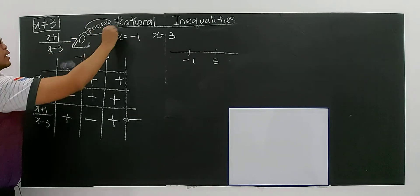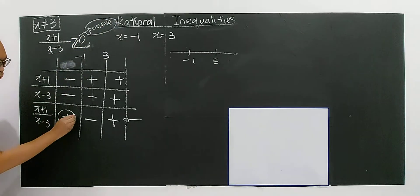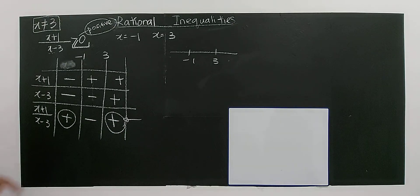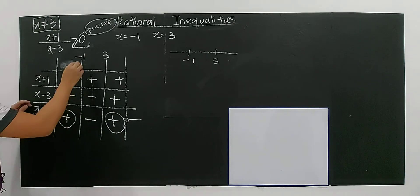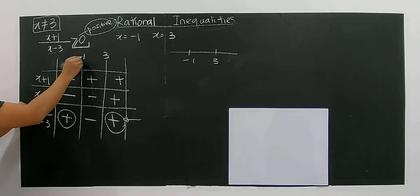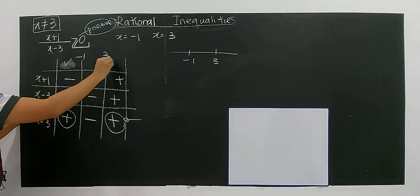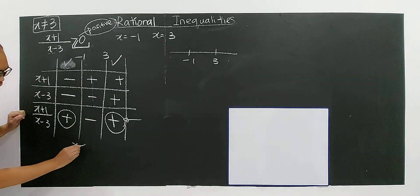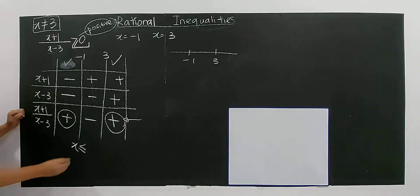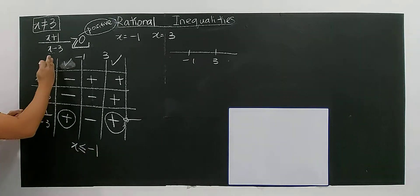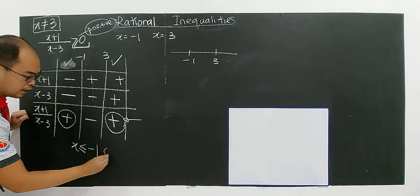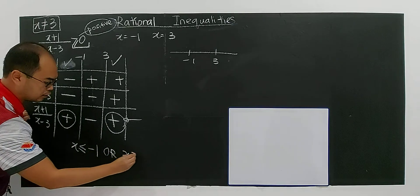You look at here - this is a positive situation, so you will choose the positive regions. Now you can see that it's actually less than negative one, so x less than or equal to negative one, or x greater than or equal to three.